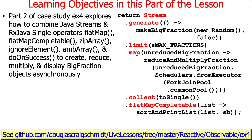We're going to use those operators to create, reduce, multiply, and display BigFraction objects asynchronously. Ironically, there aren't actually any Observables here — we're going to use Singles in conjunction with Java Streams to show how you can mix and match these frameworks together. This is in the ex4 project in the Reactive Observable folder in the GitHub repository.